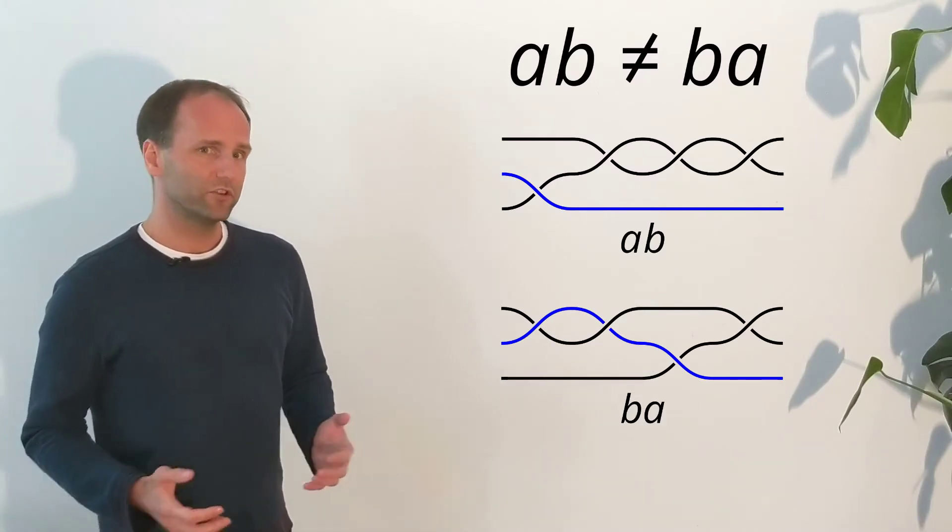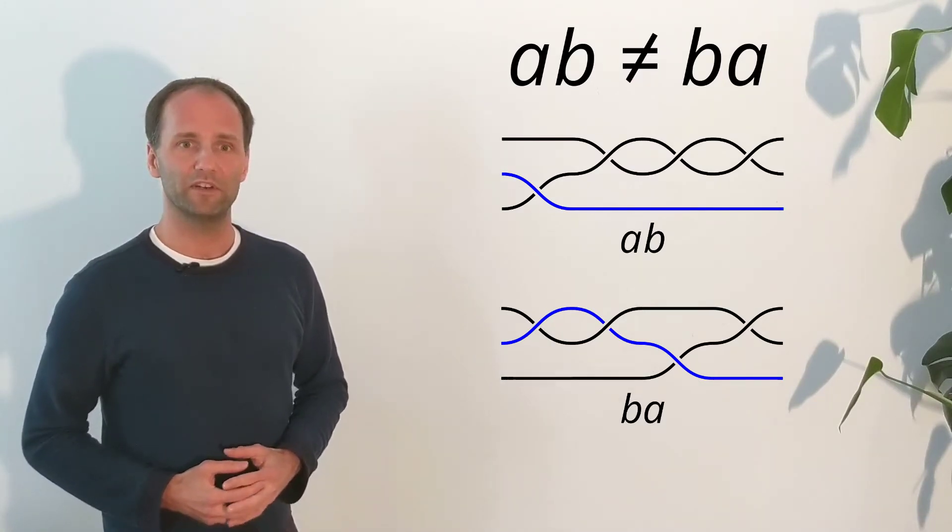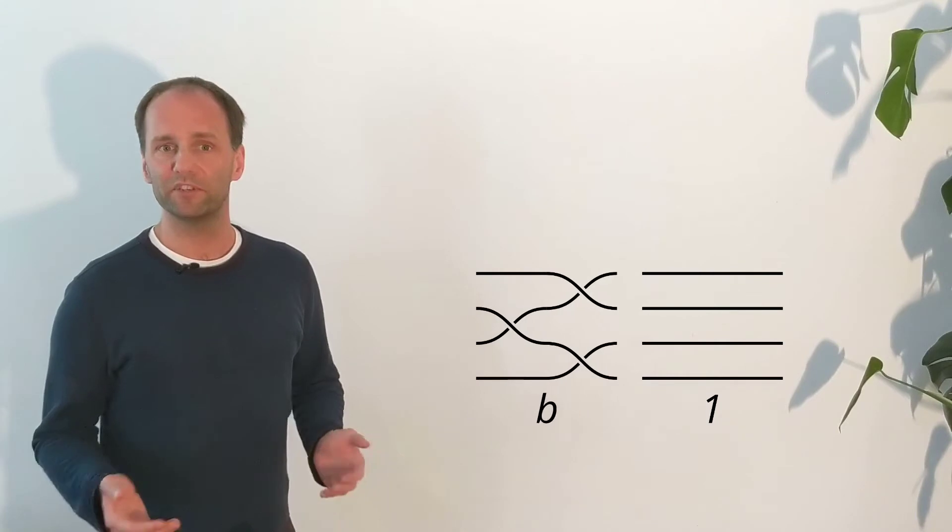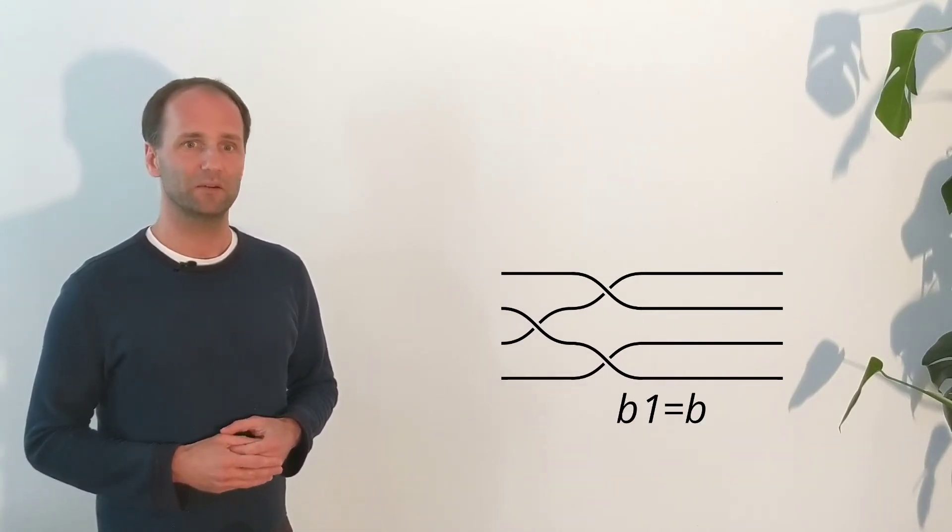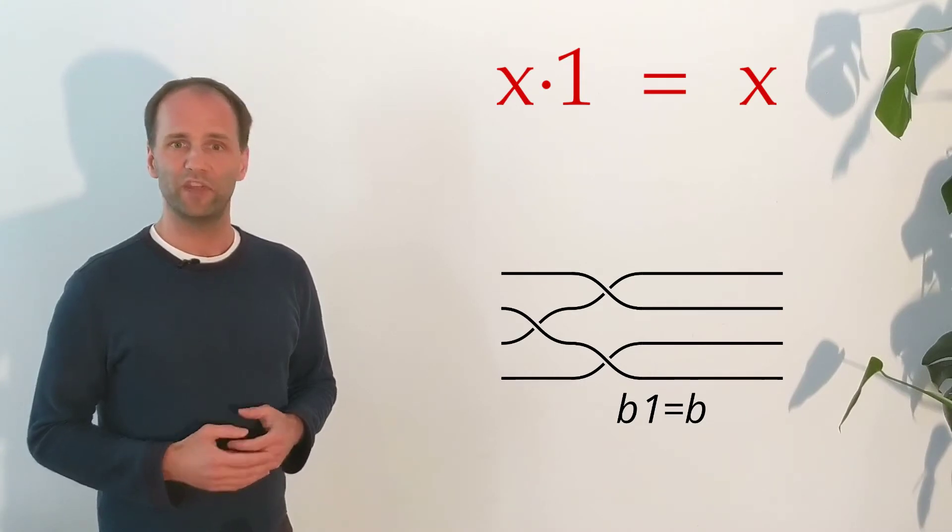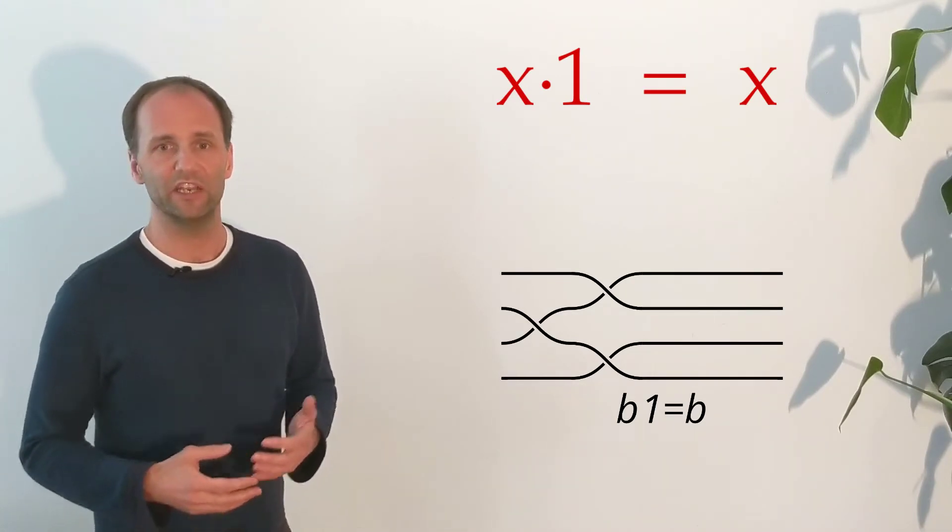Apart from this curiosity, there are several similarities to numbers. As far as products are concerned, the braid without any crossings that you see here behaves like the number 1. It has the property that when multiplied with an arbitrary braid B, it gives again B, just like multiplying 1 with any number X gives again X.